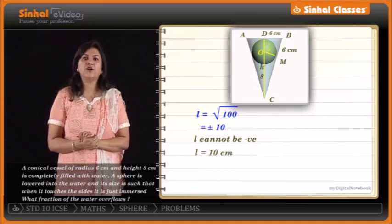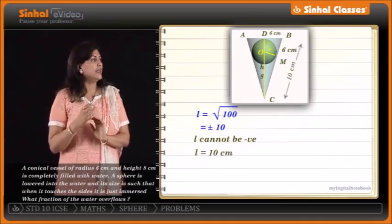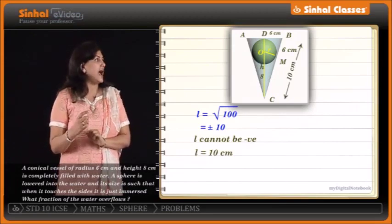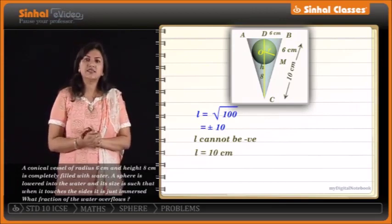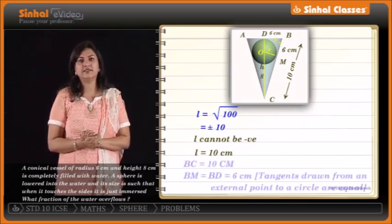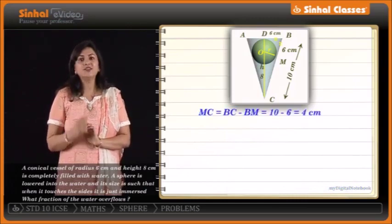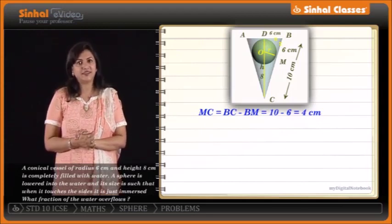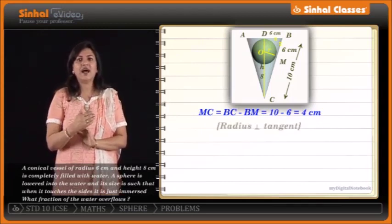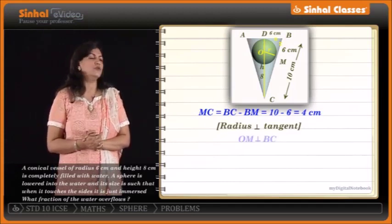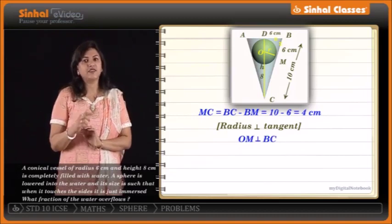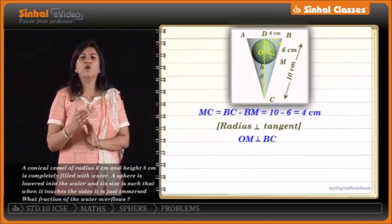The slant height of the cone is 10 cm. We have BC as 10 cm and BM as 6 cm, so MC = 10 − 6 = 4 cm. The radius is always perpendicular to the tangent, so OM is perpendicular to BC, meaning angle M is 90 degrees. This gives us right-angle triangle OMC.